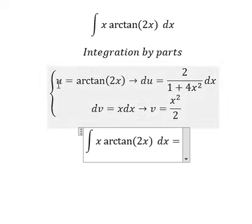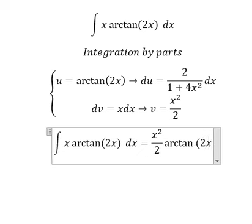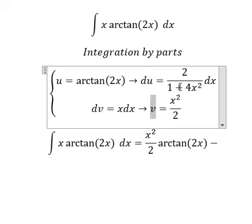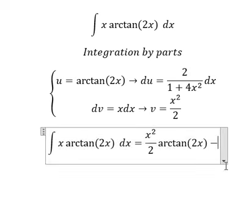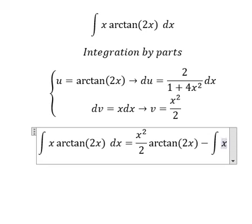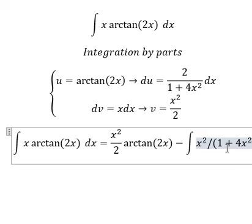So we have u multiplied by v minus the integral of v du. So the 2 and 2 cancel, and now we have the integration of x² over 1 plus 4x² dx.